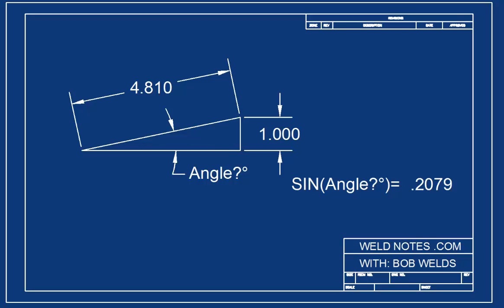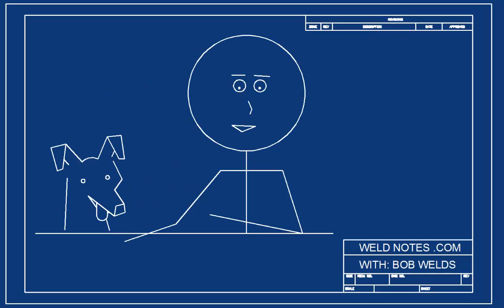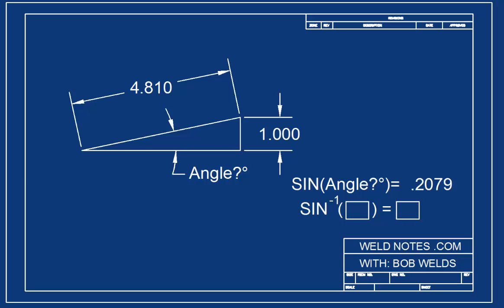Now for the second part. Let's use the arc sine to find what the angle is. Remember, we know that the sine of the angle is .2079. Okay, pause the video and be sure you know how to find the angle using the sine of the angle. Fill in the blanks and do the calculations on your calculator.